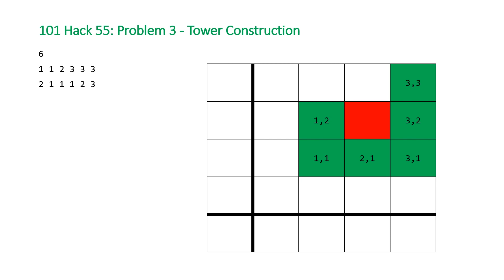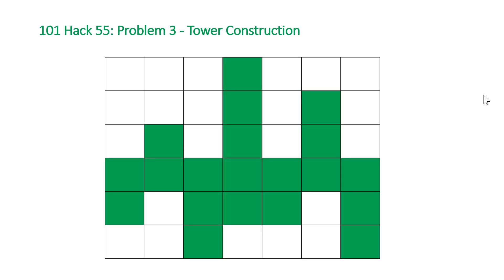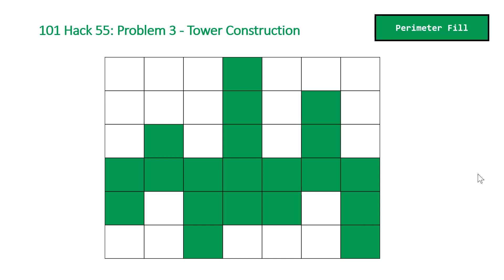We're going to take a more convoluted example to illustrate how this algorithm works. We'll call it the "perimeter fill" algorithm. The idea is to find the perimeter of the final city we need to construct, and once we have that perimeter we can quickly calculate the number of towers we need to build. First, we need to identify the maximum y value and the minimum y value for each x coordinate.